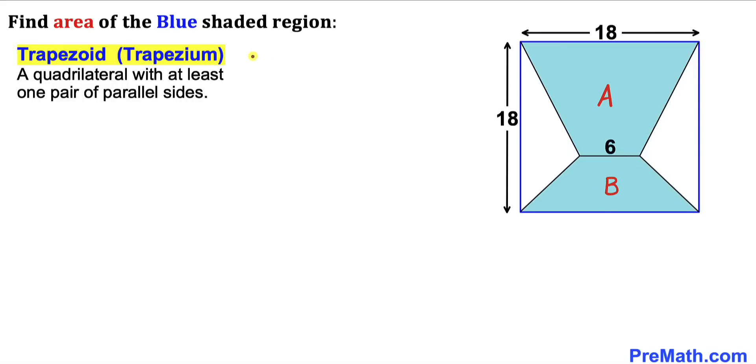And now let's recall the definition of a trapezoid, sometimes we call it trapezium. A quadrilateral with at least one pair of parallel sides, and the area of the trapezoid is always equal to